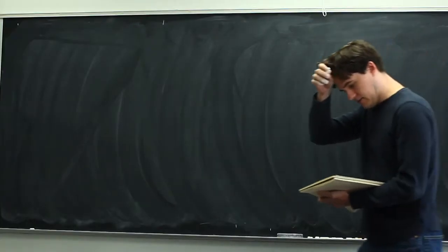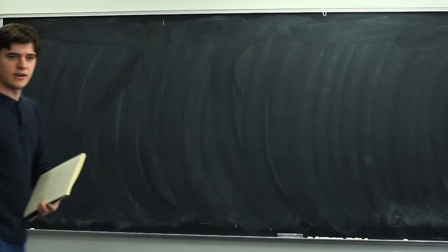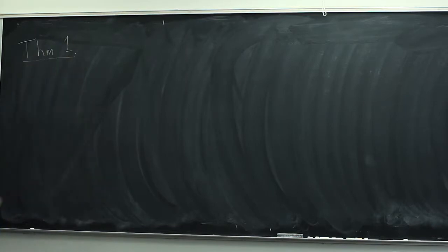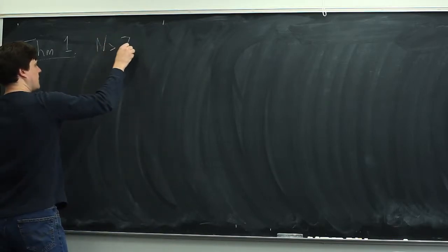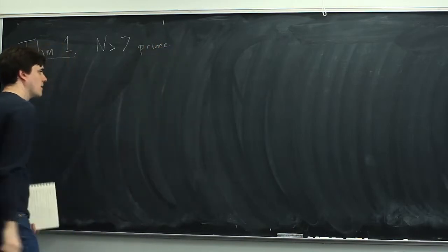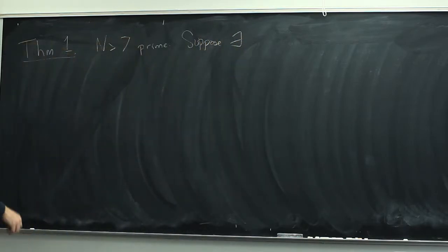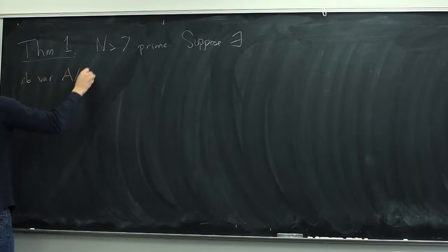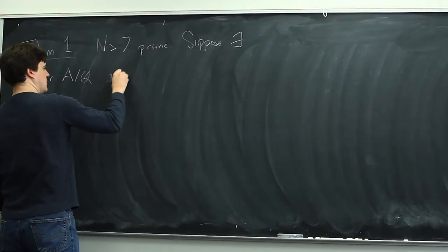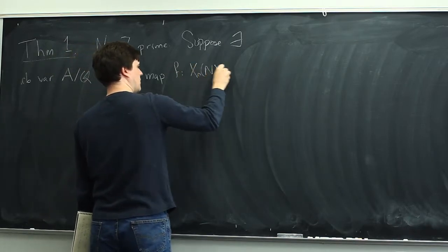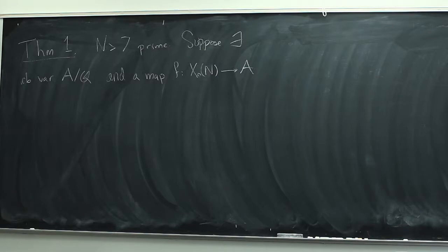Today we're going to prove what I call Theorem A from the first lecture. This is a criterion for elliptic curves over Q not to have n-torsion. Let me remind you what the theorem says. I'm going to call this Theorem 1. I'll state three theorems in this lecture. It says: suppose you have a prime number n greater than 7, and suppose there exists an abelian variety A over the rational numbers, and a map of varieties f from X_0(n) to A, such that the following three conditions hold.